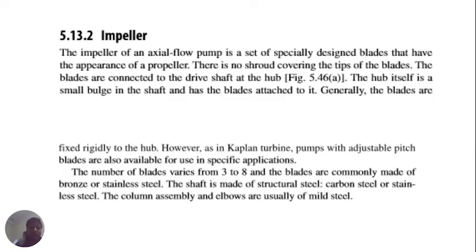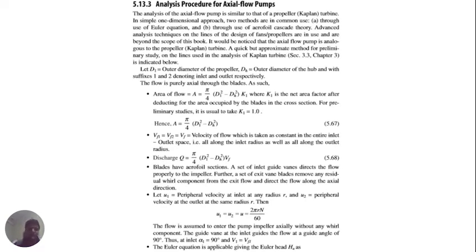The impeller of an axial flow pump consists of a set of specially designed blades with the appearance of a propeller. There is no shroud covering on the blade tips. The blades are connected to the drive shaft at the hub, which is a small bulge in the shaft. The blades are generally fixed rigidly to the hub; however, in Kaplan turbine pumps with adjustable pitch, adjustable blades are also available. The analysis of the axial flow pump is similar to that of a propeller or Kaplan turbine. Two methods are in common use: through the Euler equation, and through airfoil cascade theory.